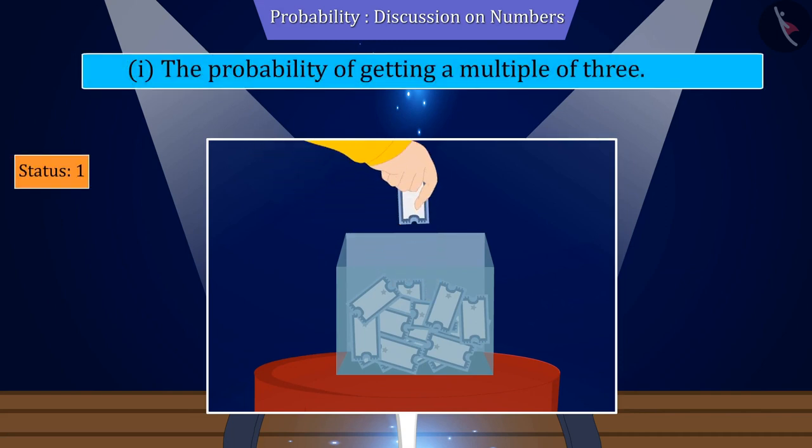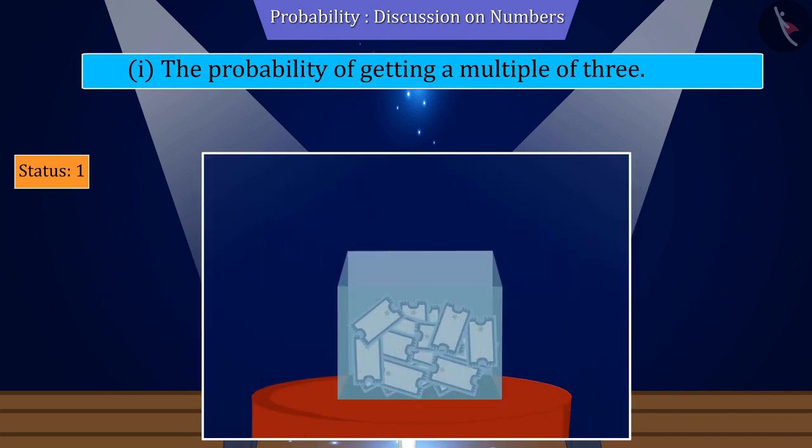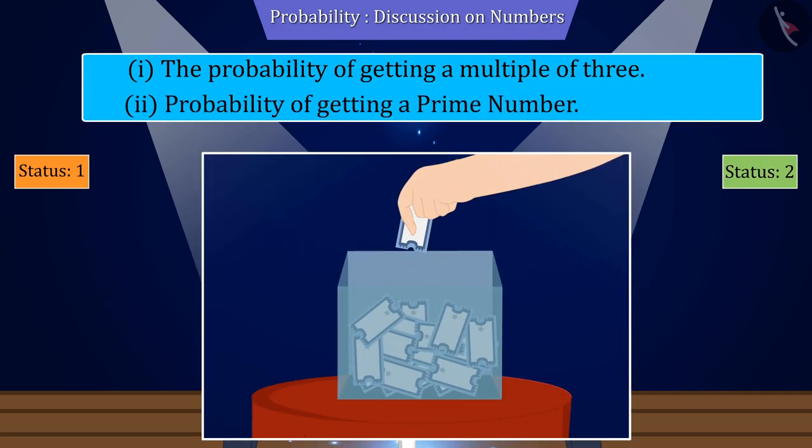Similarly, if any slip out of 20 slips is picked up by Ayush, find the probability of getting a prime number.